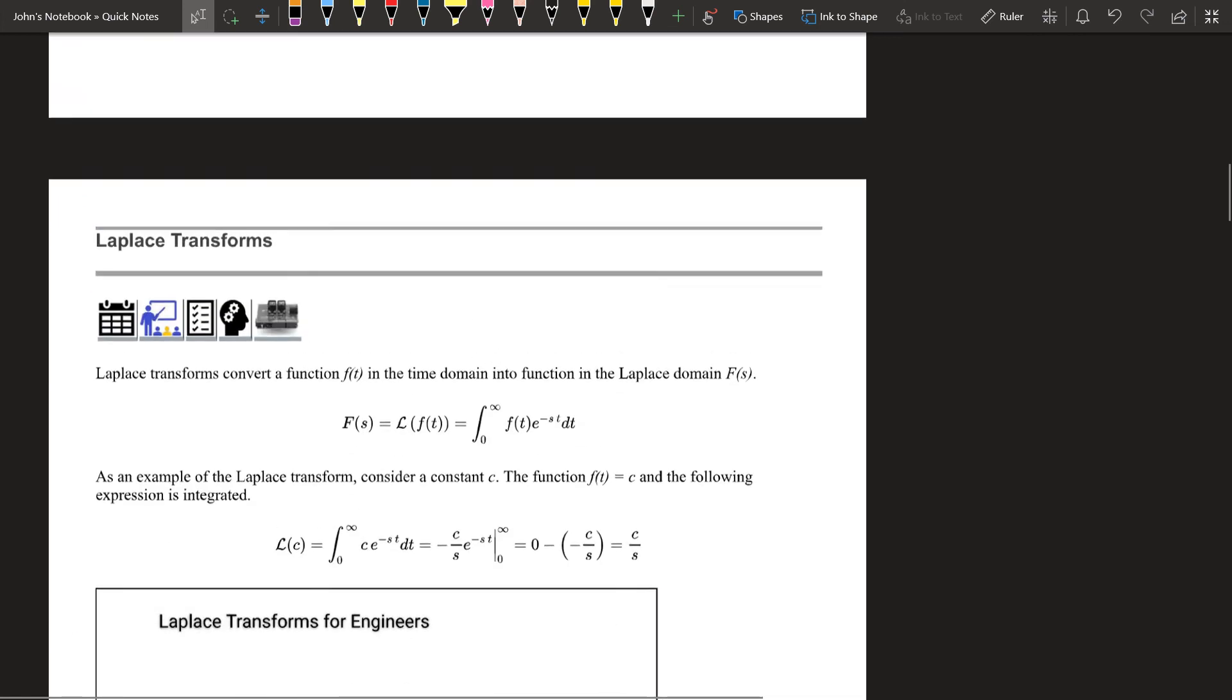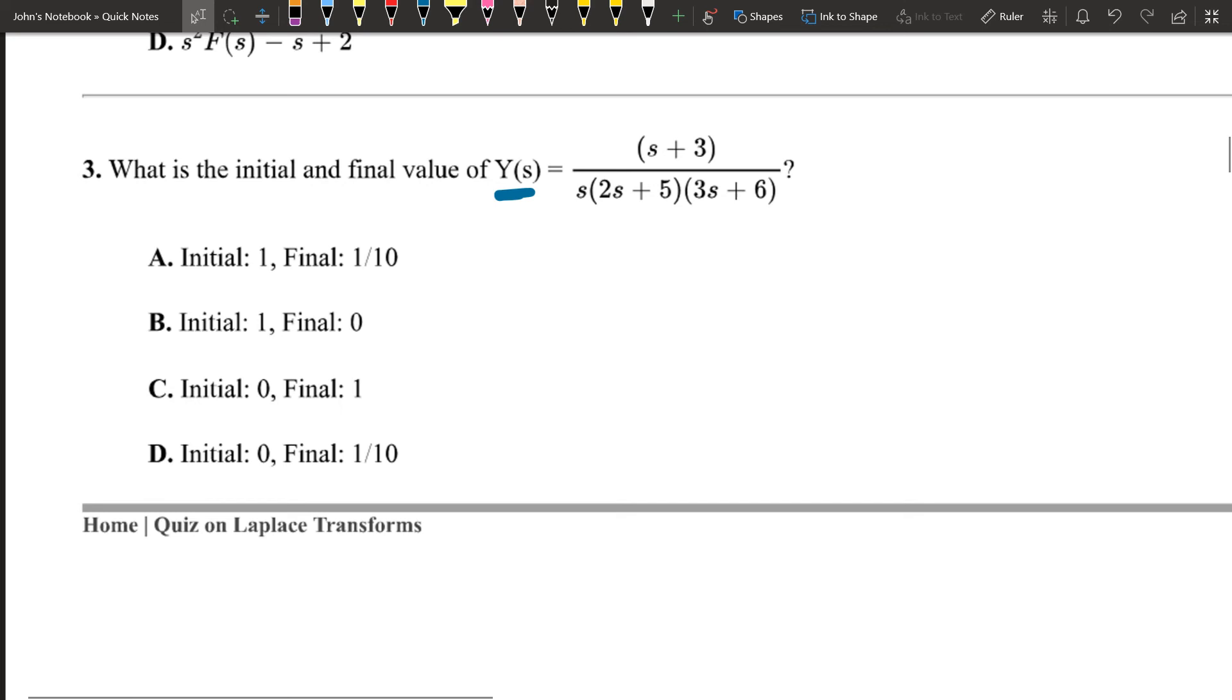To get the final value and the initial value. Now, this does not work. One condition for this is it has to be stable, a stable system. For example, if you had a negative here instead of a positive, that would be an unstable system. We'll learn about how to determine if something is stable or unstable, but it only applies to stable systems. If you have something in the denominator where the root is positive, has a positive real part, then it's going to be an unstable system, and the final value theorem does not apply. In this case, it looks like all of ours are s equals 0, s equals negative 5 halves, and s equals negative 2. Those are going to be our roots. There's no positive real part of our signal there, so we can apply the final value theorem.